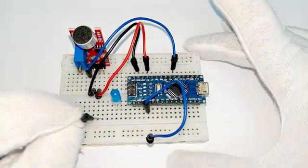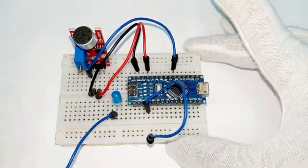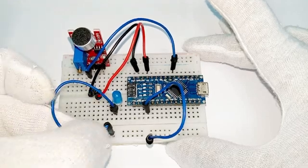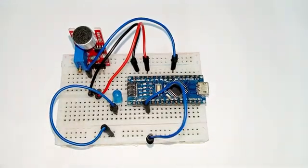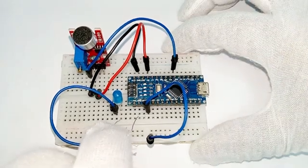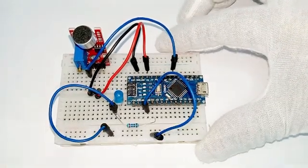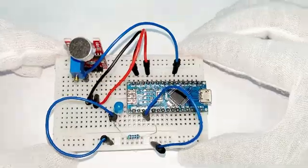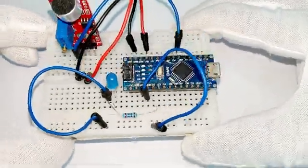The negative of LED is connected to the GND of Arduino Nano. Connect a 200 ohms resistor from positive of LED to pin 2 of Arduino Nano.